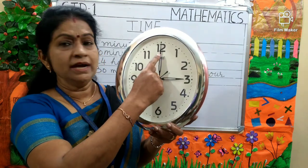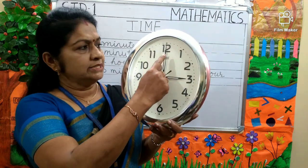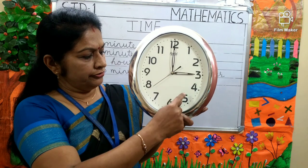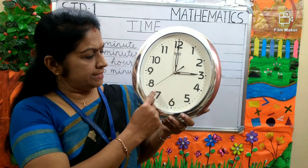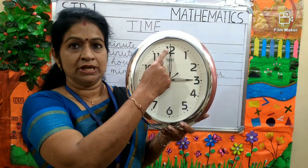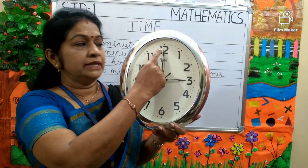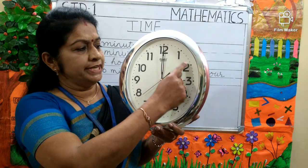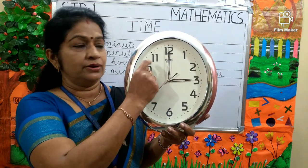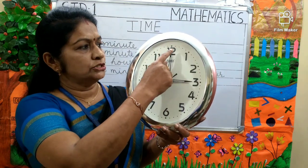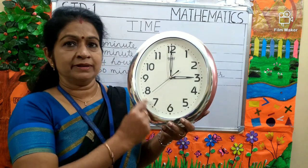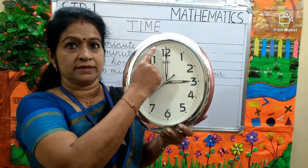Here are numbers from 1, 2, 3, 4, 5, 6, 7, 8, 9, 10, 11 and 12. The minutes between each number is 5 minutes. So total 60 minutes will be there going round the clock.